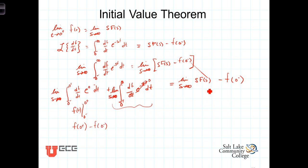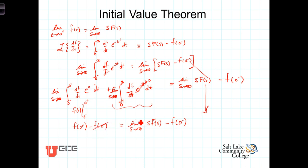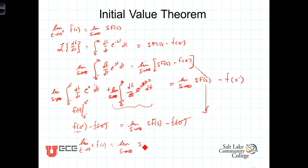That's our left-hand side. On the right-hand side we have the limit as s approaches infinity of s·F(s) minus f(0 minus). On both sides we have a negative f(0 minus) term, which cancels. And we're left with what we set out to prove: that the limit as t approaches 0 plus of f(t) equals the limit as s approaches infinity of s·F(s).